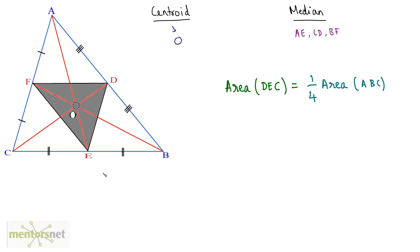One thing I forgot to mention is about medians. Median AE divides triangle ABC into two triangles: ACE and ABE, and the areas of these two triangles are equal. The same is the case with median CD — it divides triangle ABC into two triangles, and the area of triangle ACD equals the area of triangle BCD.